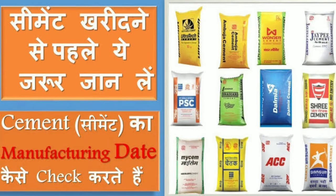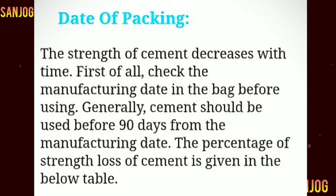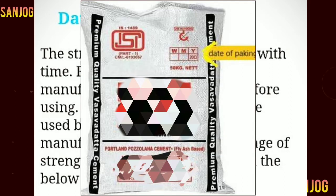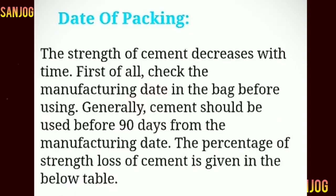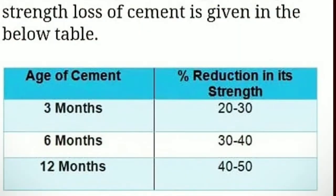The first point is the date of packing. We have to check the cement manufacturer's date because cement strength decreases over time. Generally, cement should be used within 90 days of the manufacturer's date. The percentage of strength loss is as follows: in 3 months, loss is 20 to 30%; in 6 months, loss is 30 to 40%; and in 12 months, loss is 40 to 50%.